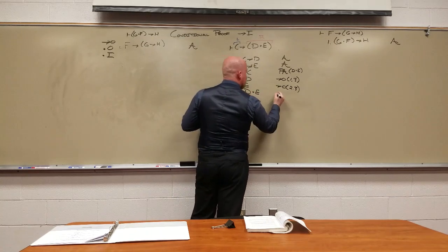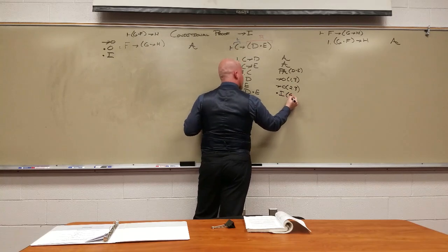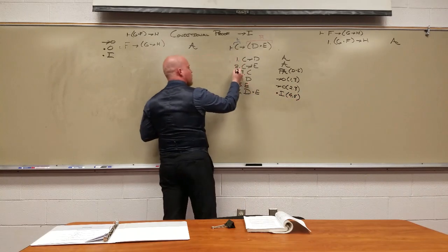Do we have the pieces to build it? D and E. And we've got to put them together. How do we put them together? Adjunction or and in. D and E. How do we get it? And in. Where do those pieces come from? Four and then five. We PA'd the left, we got the right.